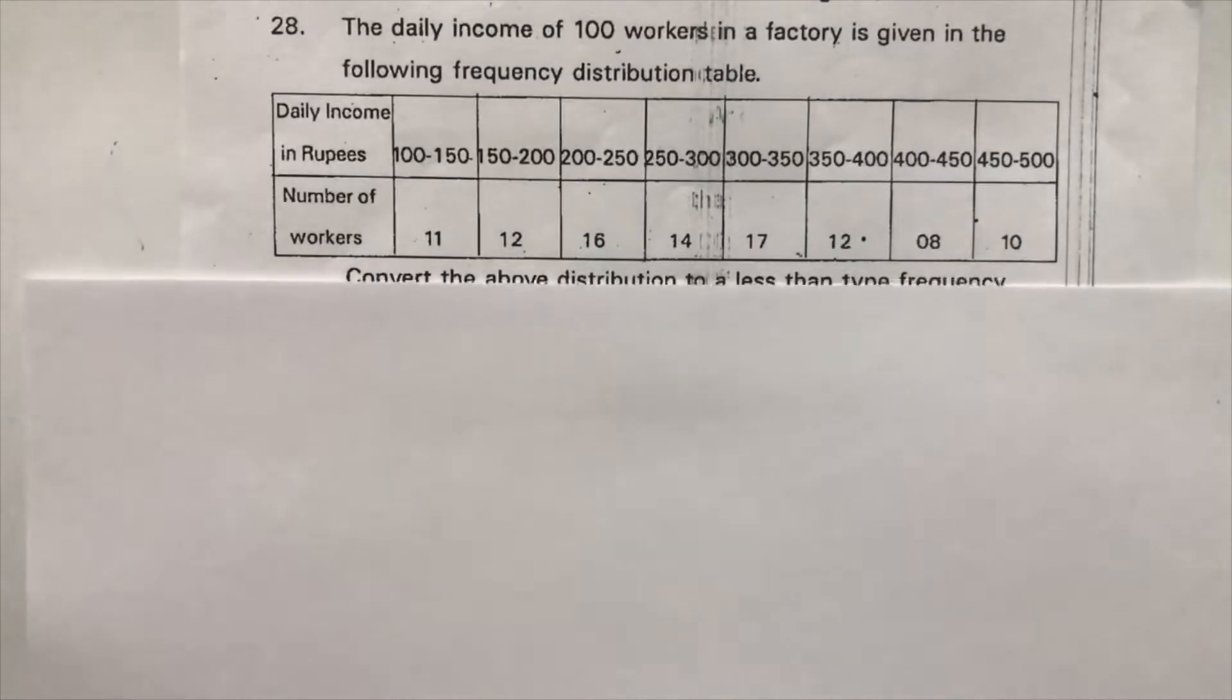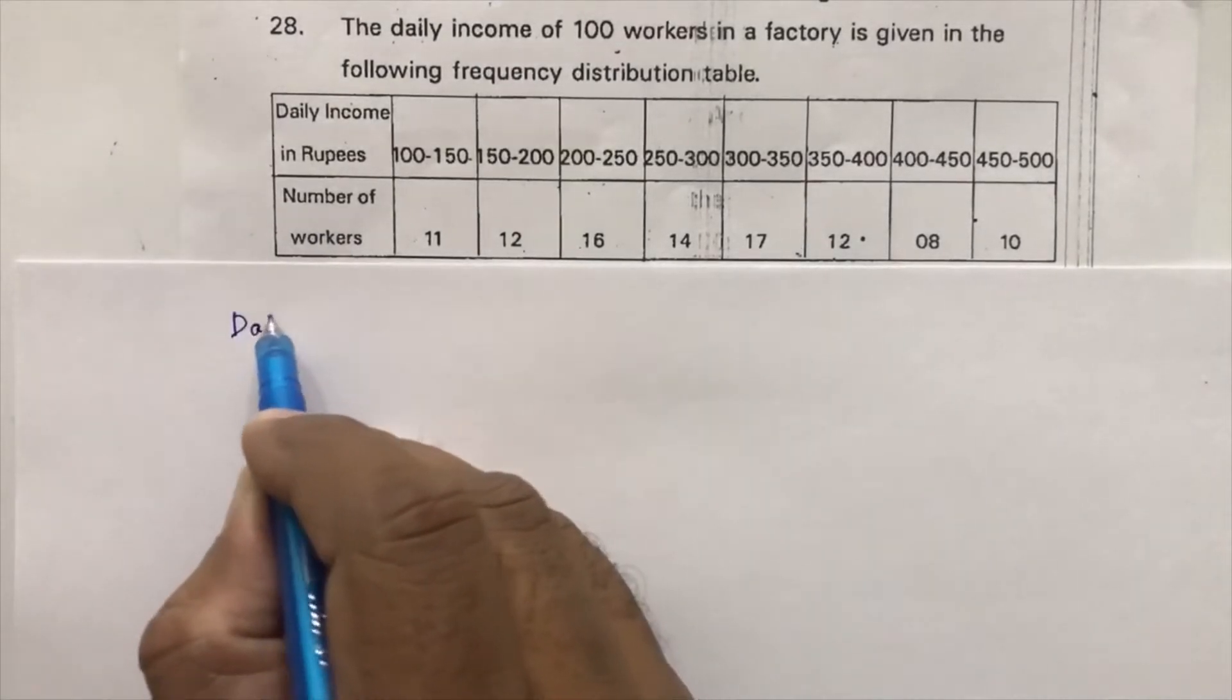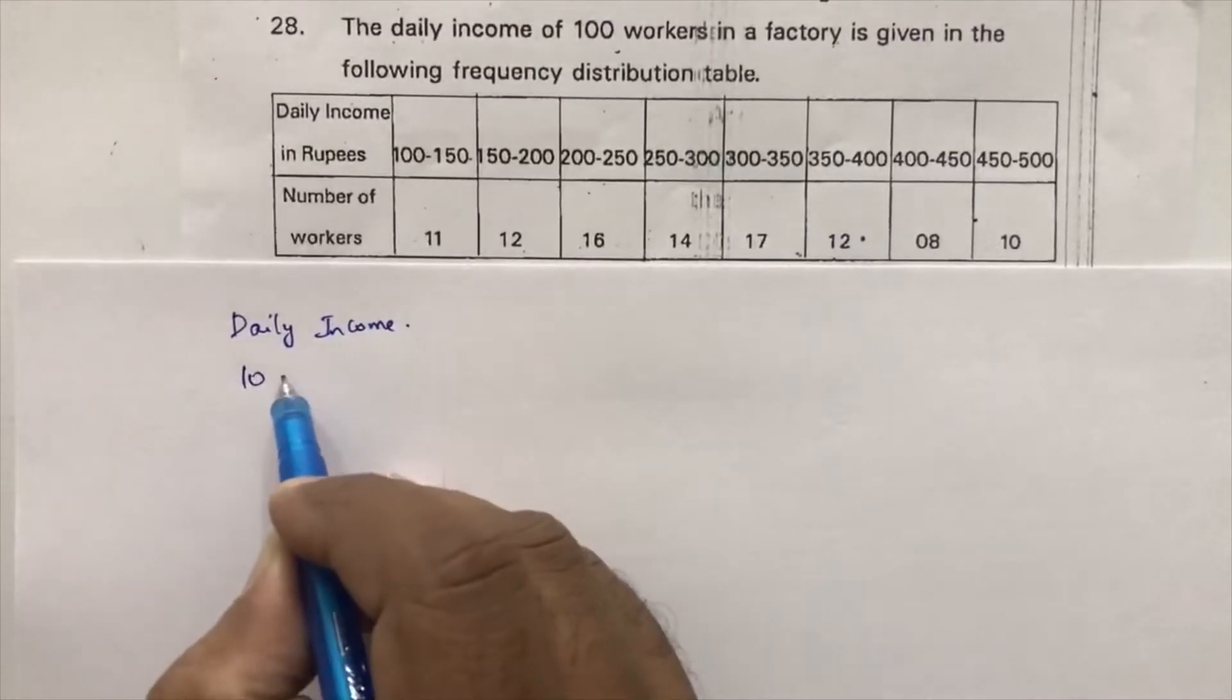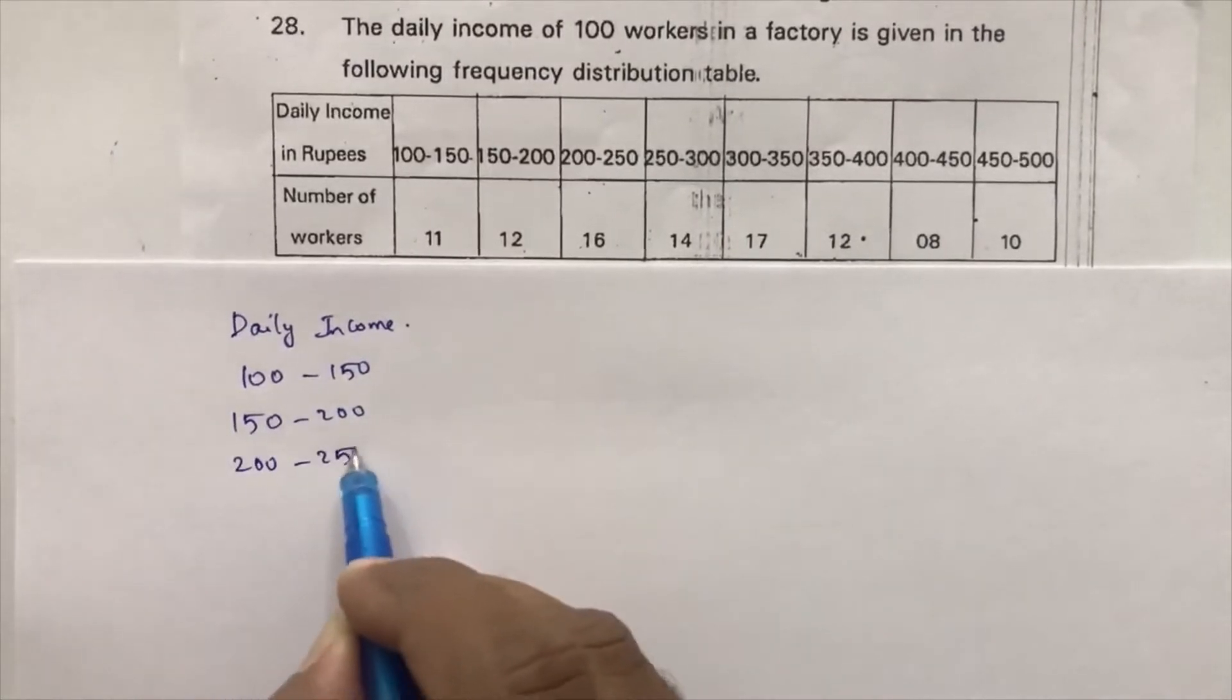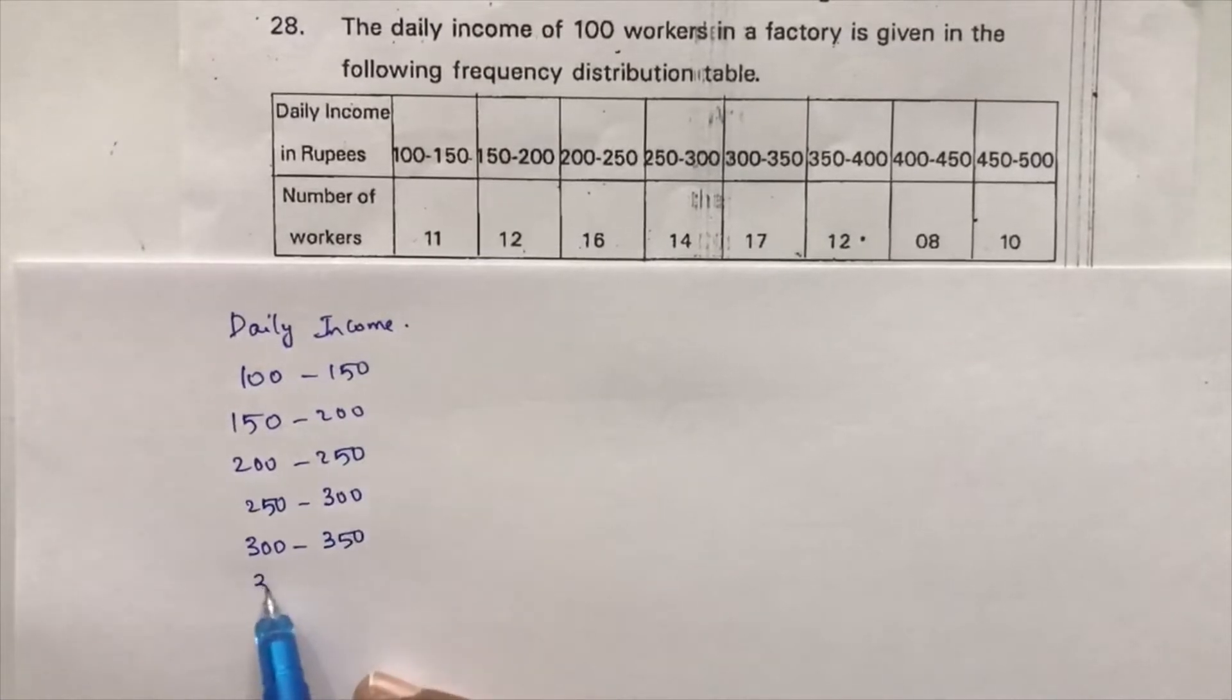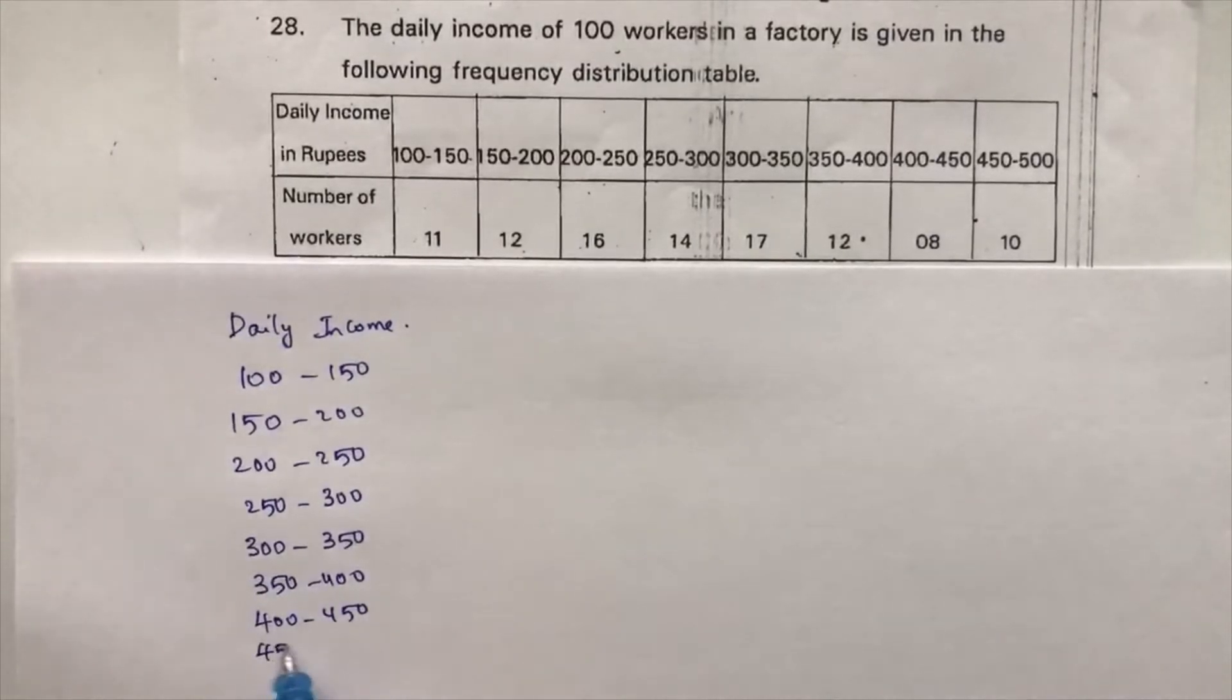Now here, see here, they give daily income. Daily income is like from 100 to 150, and 150 to 200, 200 to 250, 250 to 300, 300 to 350, 350 to 400, in the same way 400 to 450, next 450 to 500.